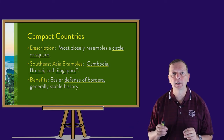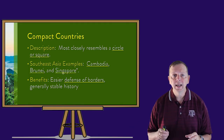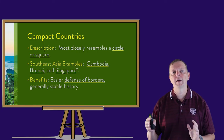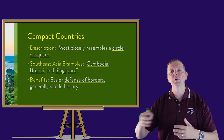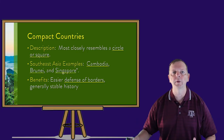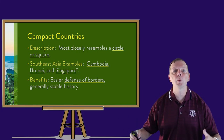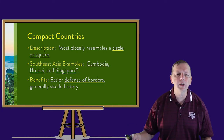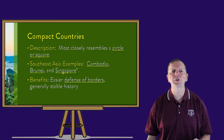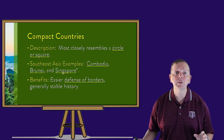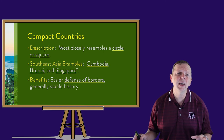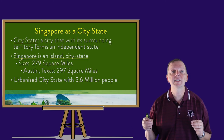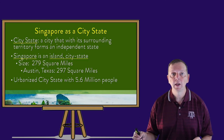The advantage of a compact country is that their shape makes it easier for a government to move services anywhere in the country, as well as to defend its borders. Generally, this means the country has a stable history. Singapore is actually another type of state — a city-state.